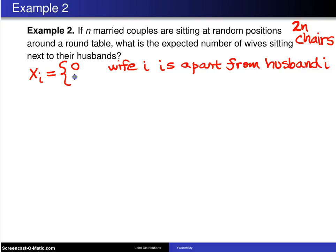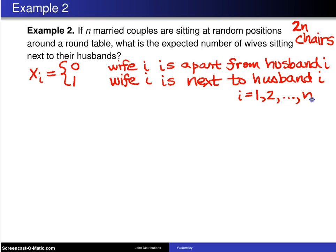And xi will equal 1, you can think of that as success, if wife i is next to husband i, and that will be defined for i equals 1 through n.